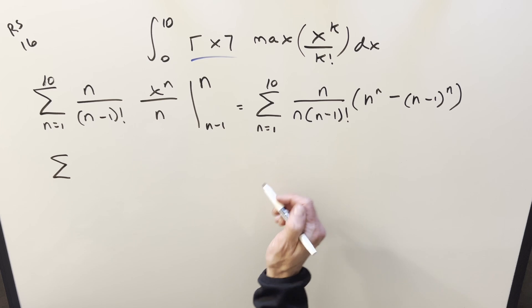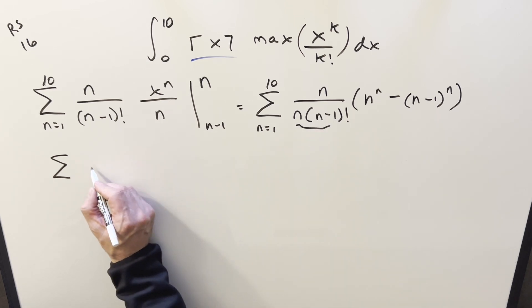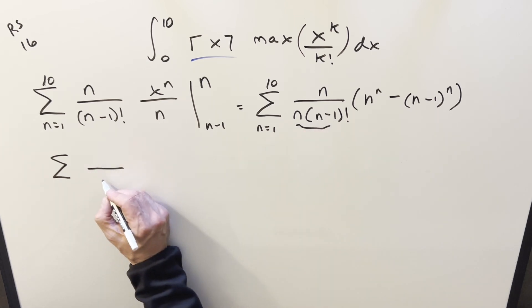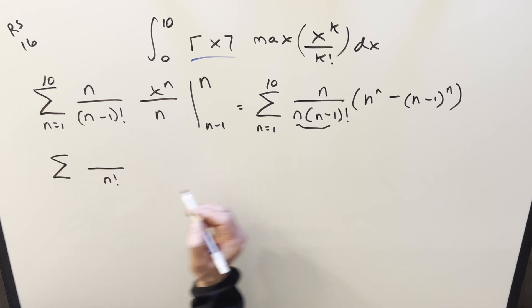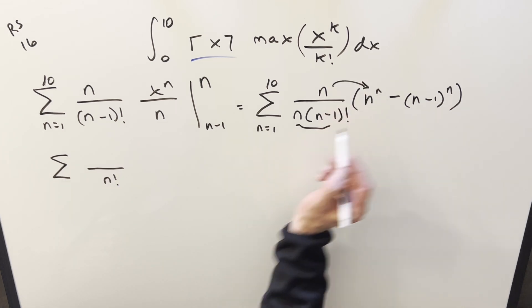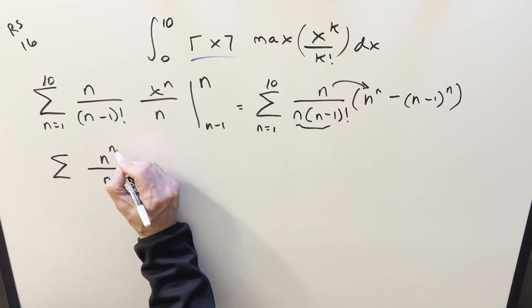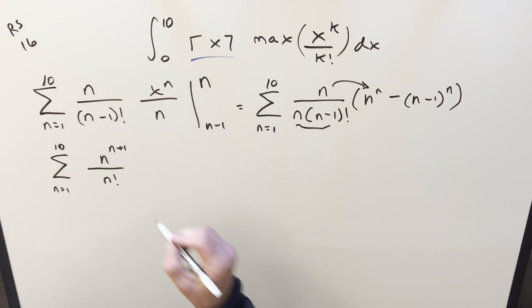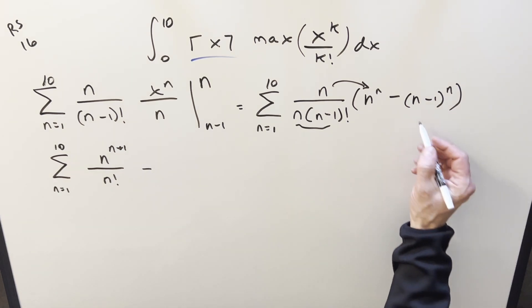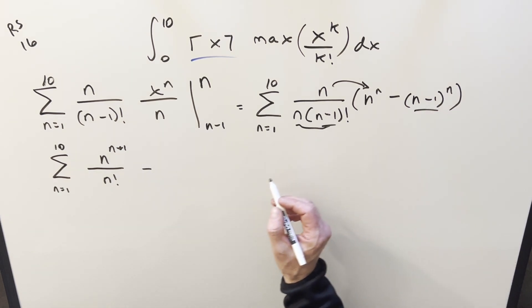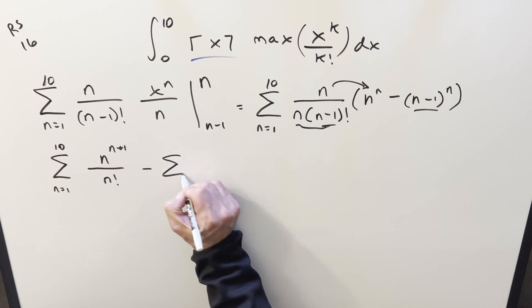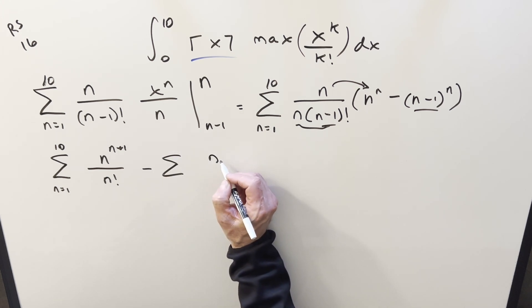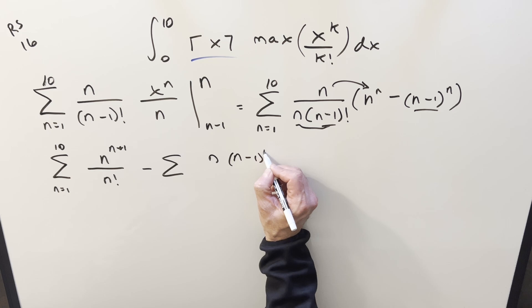So for the first one, now on this first one, I am going to simplify this part. We're going to create that n times n minus 1 factorial is the same thing as n factorial. Multiply an n in here, and we get n to the n plus 1. And then on the second one, what I want to do is notice that we've got n minus 1 and n minus 1 here. So I want to write it that way. So we'll have n times n minus 1 to the n.